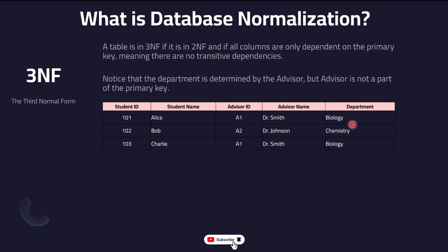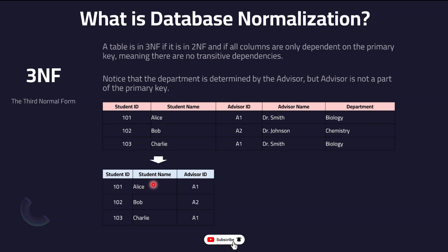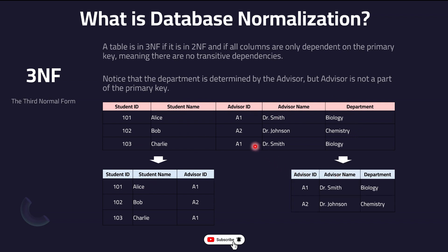To fix this, you either create a separate table for departments linked with an ID, or you create two separate tables: one for student information and one for advisor information including the department. That way, this advisor belongs to the biology department, another to chemistry. When you create a record and refer to an advisor, they are properly linked to a primary key. Biology is no longer floating without linkage — that is the 3NF rule.